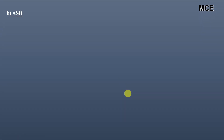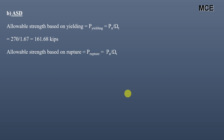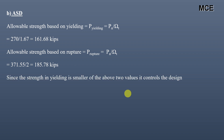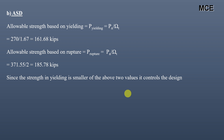For ASD, the allowable strength based on yielding is P_n / Ω = 270 / 1.67 = 161.68 kips. The allowable strength based on rupture is P_n / Ω = 371.55 / 2 = 185.78 kips. The yielding strength is again the smaller value and governs the design. Therefore the ASD allowable strength is 161.68 kips.